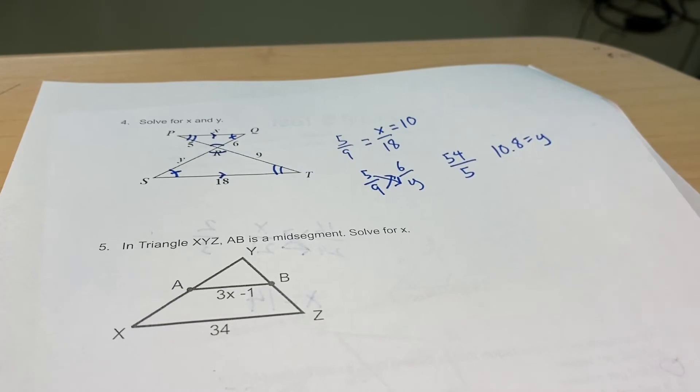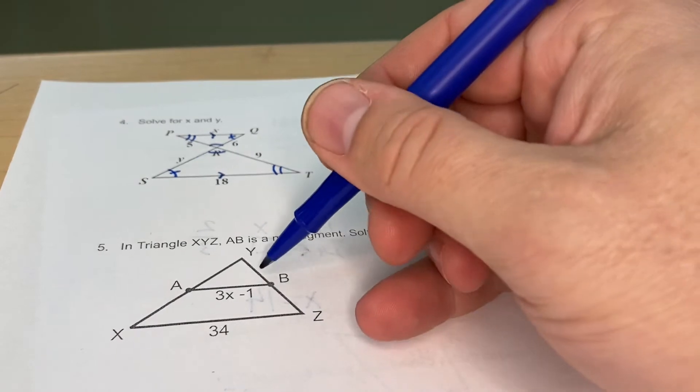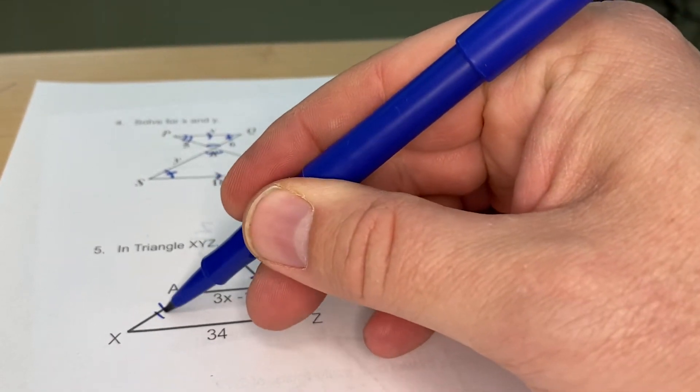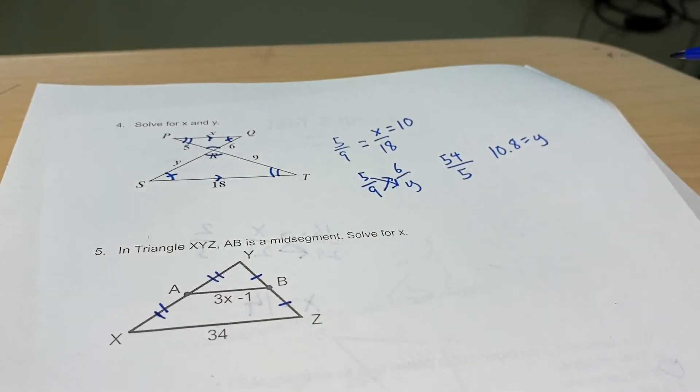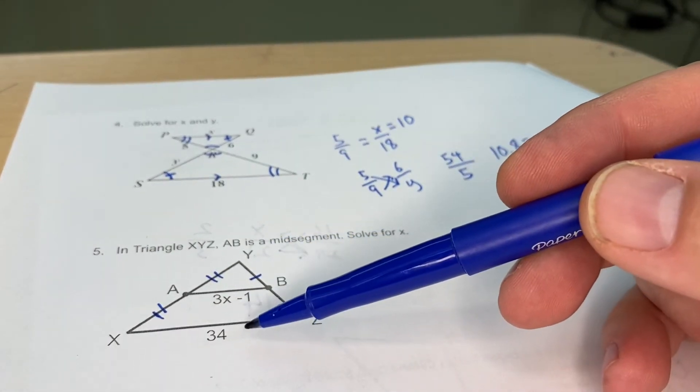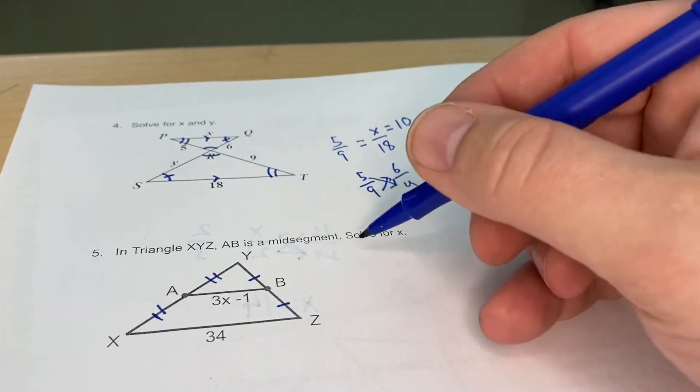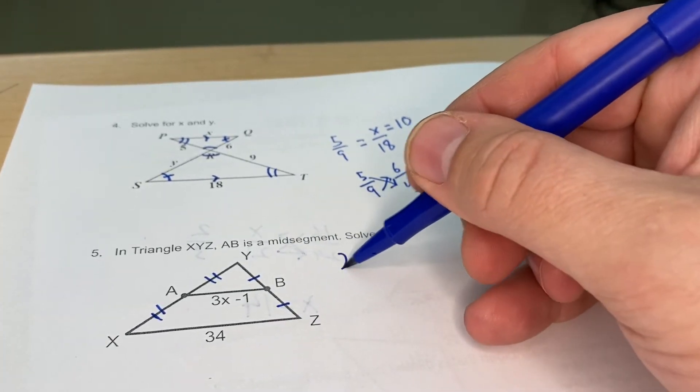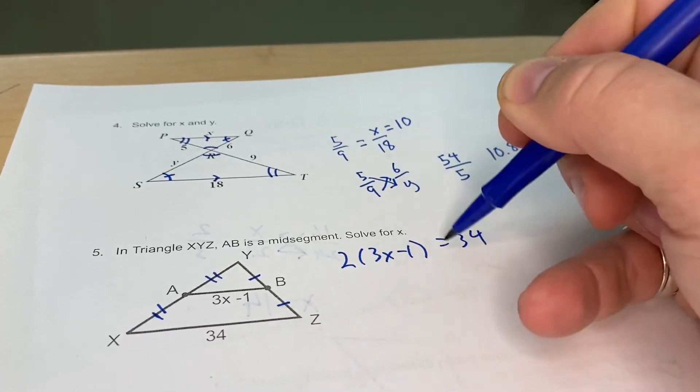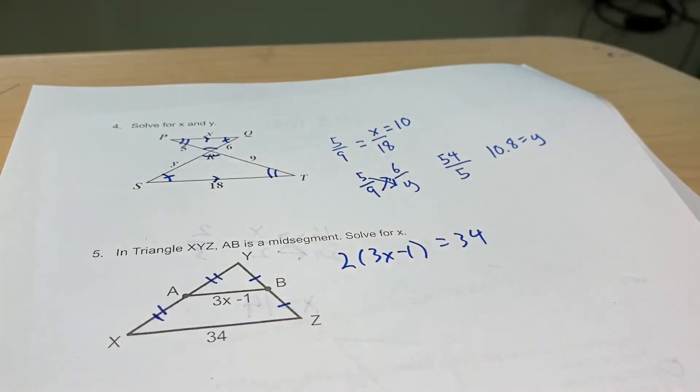On number five, in triangle XYZ, AB is a midsegment. Solve for x. That means these are equal. A and B are the midpoints of their respective sides, so this is going to be half of this. Now I've got an even number here, so I can set this up two different ways. I can say 2 times 3x minus 1 is equal to 34. I can distribute that out and I can work that, but I'm interested in shortcuts always. And in this case, 34 is divisible by 2.